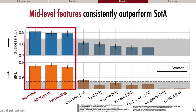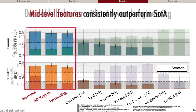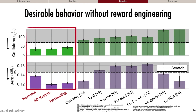They also do better along task-specific metrics. For both metrics, higher is better, and agents using mid-level vision, shown in the red box, perform significantly better. Agents using mid-level vision also show desirable behavior for which the reward didn't explicitly encode: they experience roughly half as many collisions along their trajectories and produce less jerky policies.